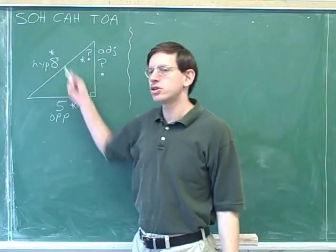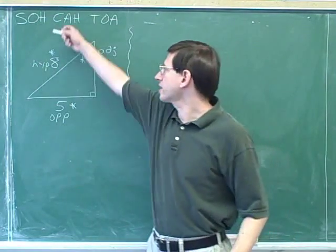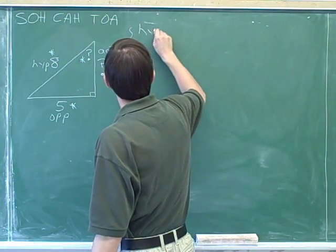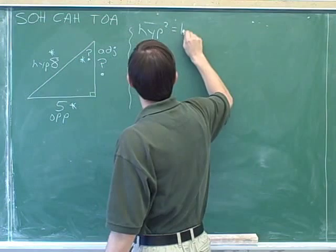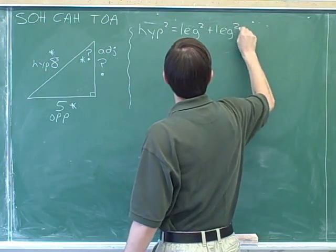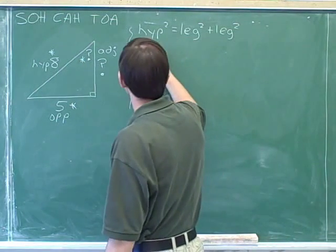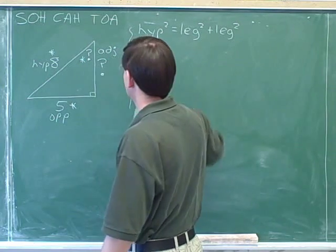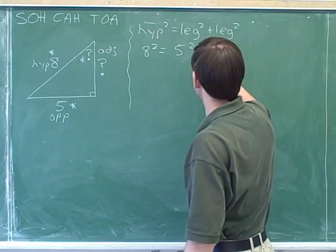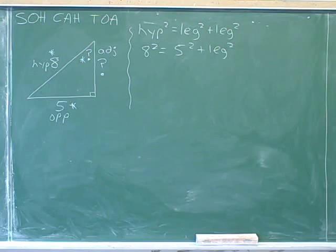This is another problem where we were given two sides. We know that to find the third side we don't need the trig functions — we can just use the Pythagorean theorem. Hypotenuse squared equals leg squared plus leg squared. We'll write the general formula first and then plug in. The hypotenuse is 8, one of the legs is 5, and the other leg we don't know.